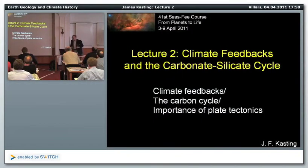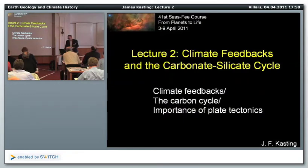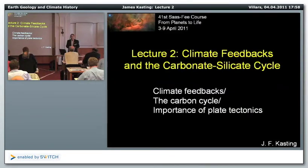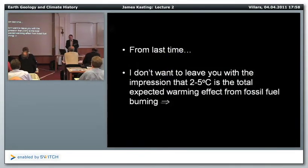Let me get started on the climate feedbacks talk. I'm going to introduce some climate notation — systems feedback notation — which is pretty simple but really useful for understanding climate feedbacks. I'm also going to talk about the carbon cycle and something called the carbonate-silicate cycle, which most astronomers don't know about, but which is the real key to understanding why the Earth is habitable and how wide the habitable zone is. Then I'll talk about the importance of plate tectonics, which fits in with the carbonate-silicate cycle.